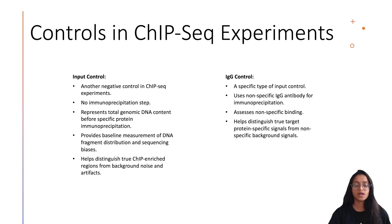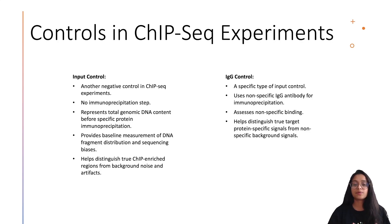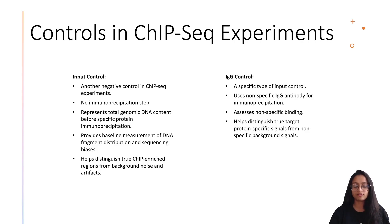Controls in ChIP-seq experiments are very crucial. All ChIP-enriched samples must be matched by appropriate control samples acquired from the same cell type under the same conditions, ideally processed in parallel. The input control is a negative control where chromatin is cross-linked, fragmented, and processed the same way as the ChIP sample, but without the immunoprecipitation step. It represents the total genomic DNA content before any specific protein immunoprecipitation, providing a baseline for DNA fragment distribution and sequencing biases.